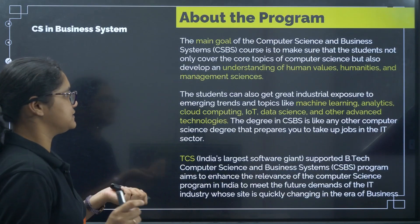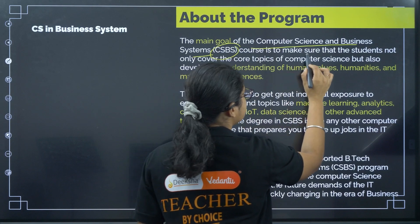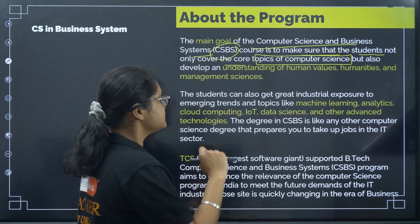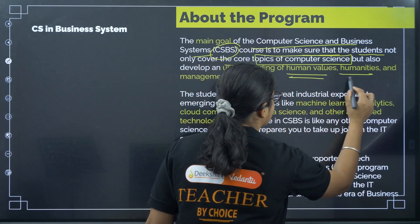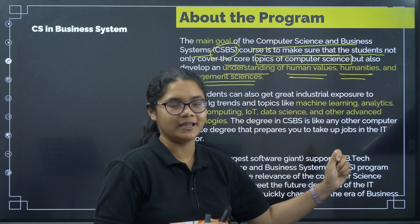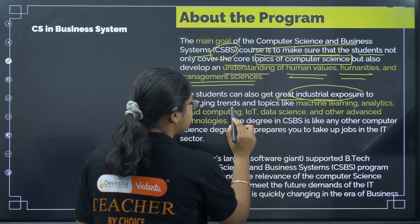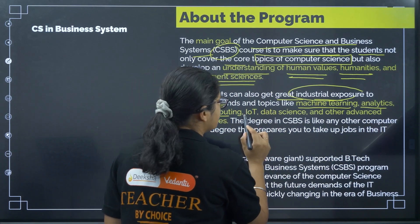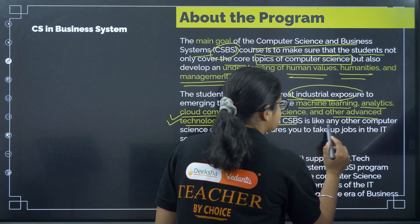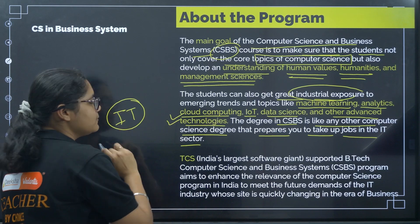Now coming to the details of computer science in business system. The main goal of the CSBS course is to ensure students not only cover the core topics of computer science, but also develop an understanding of human values, humanities and management sciences. Students also get great industrial exposure to emerging trends such as machine learning, analytics, cloud computing, IoT, and data science. The CSBS degree, like any other computer science degree, prepares you to take up jobs in the IT sector.